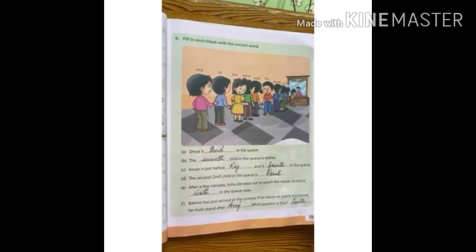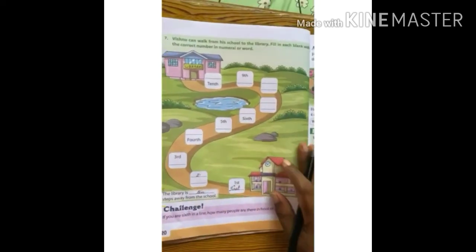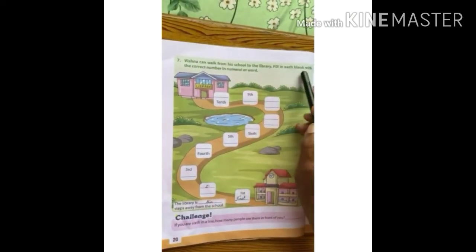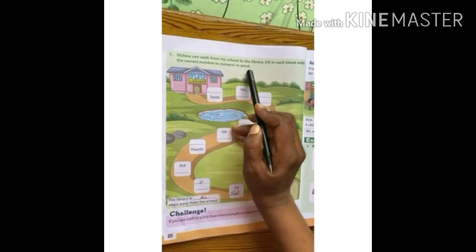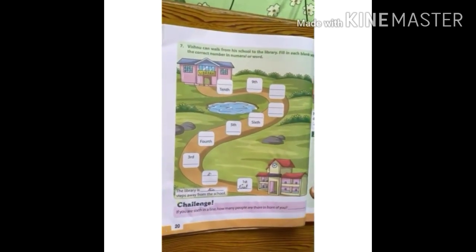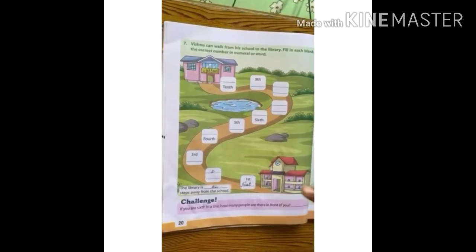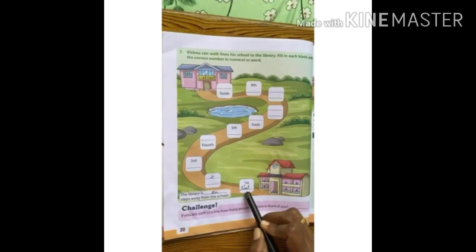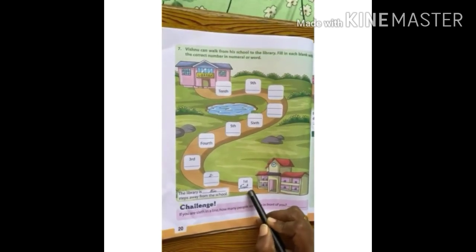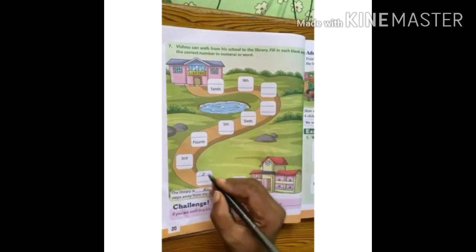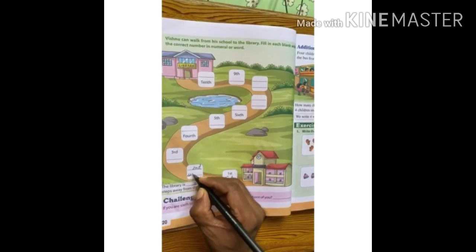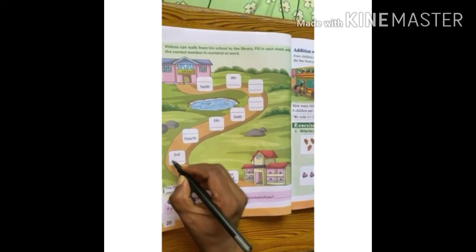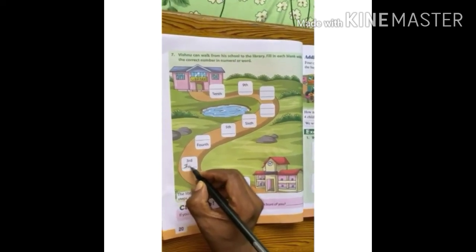Now come to the next page, page number 20. Question number 7: Vishnu can walk from his school to the library. Fill in the blanks with the correct number in numeral or word. Count how many steps Vishnu takes to go from school to library. First — write in word also: F-I-R-S-T. Second — write here second: S-E-C-O-N-D. Third is already written — T-H-I-R-D.